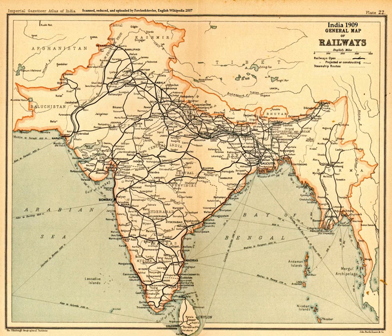Prasanan Parthasarathy countered that several post-Mughal states did not decline, notably Bengal and Mysore, which were comparable to Britain into the late 18th century.